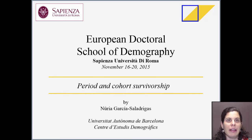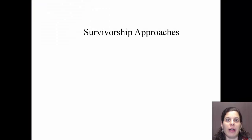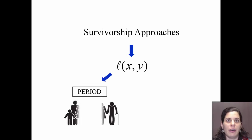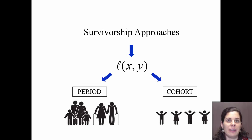Period and cohort survivorship. There are two approaches to the survivorship, or L: period and cohort. How are they represented in the Lexis diagram?